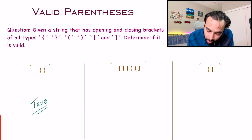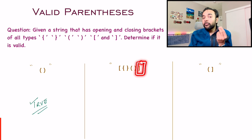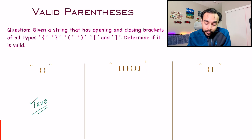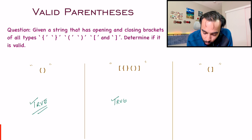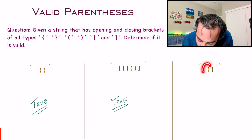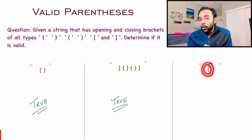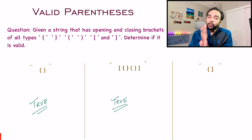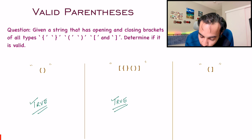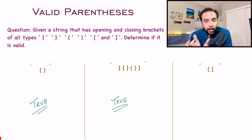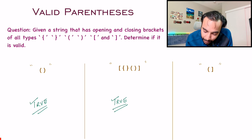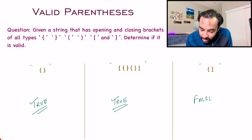We are left with one more square bracket and we close it, so this string is also valid — we return true. For the third test case, we open a normal bracket first, and before we can close any other bracket, we have to close this one. But instead, we close a square bracket first, and this is not valid. So for this particular test case, we return false as our answer.